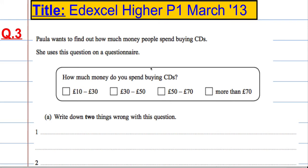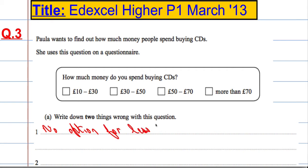Question three: Paula wants to find out how much money people spend buying CDs and she uses a question on a questionnaire with a tick box system. We're asked to write down two things wrong with this question. Well, what happens if you don't buy CDs at all? In this day and age, MP3s are the way to go, so there's no option for anything less than 10 pounds. One thing wrong is that there is no option for less than 10 pounds.